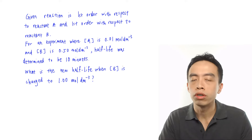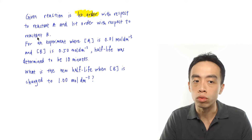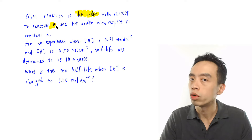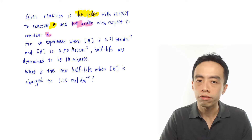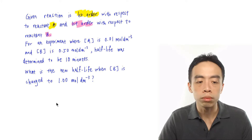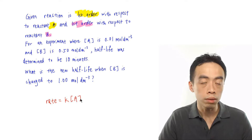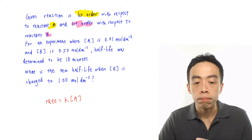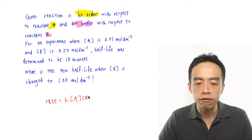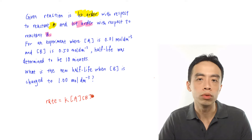Let's write out the rate equation for this reaction first. We know that it is first-order with respect to A, and also first-order with respect to B. So writing out the rate equation shouldn't be a problem. The rate equals the rate constant K, multiplied by concentration of A to the power 1, multiplied by concentration of B to the power 1.